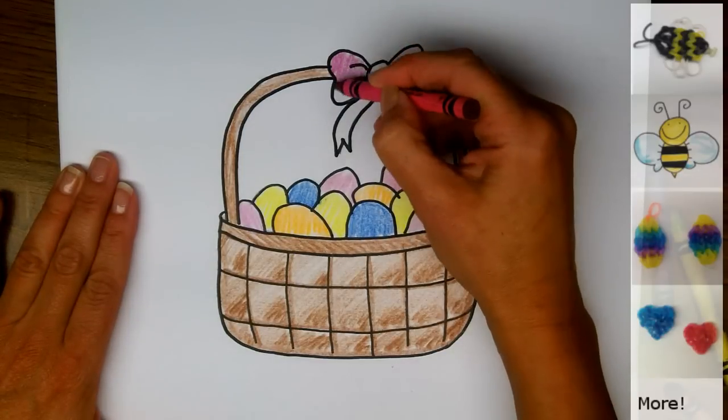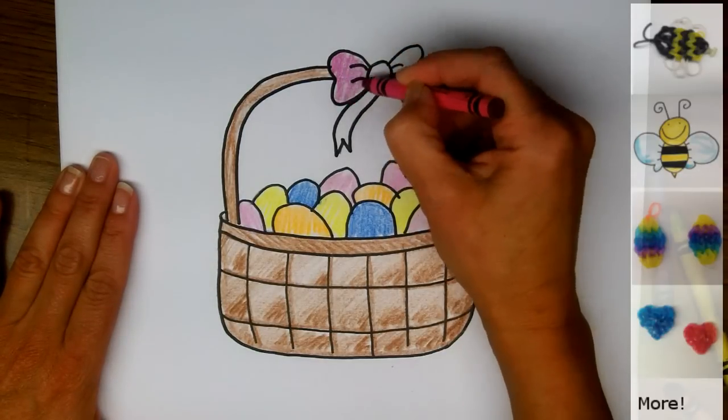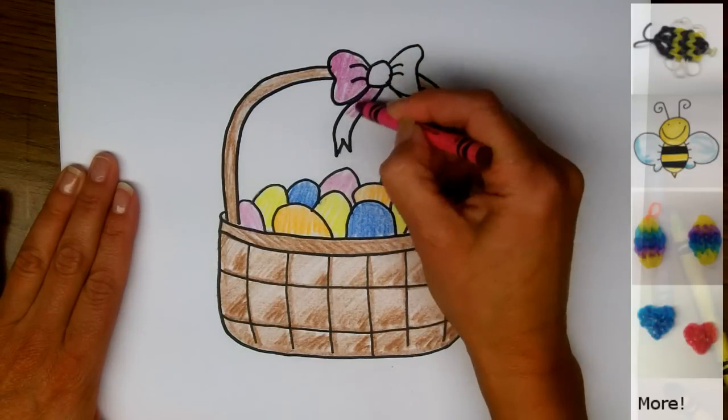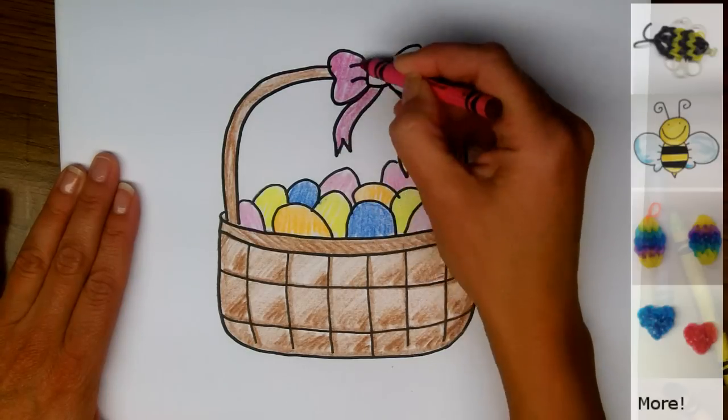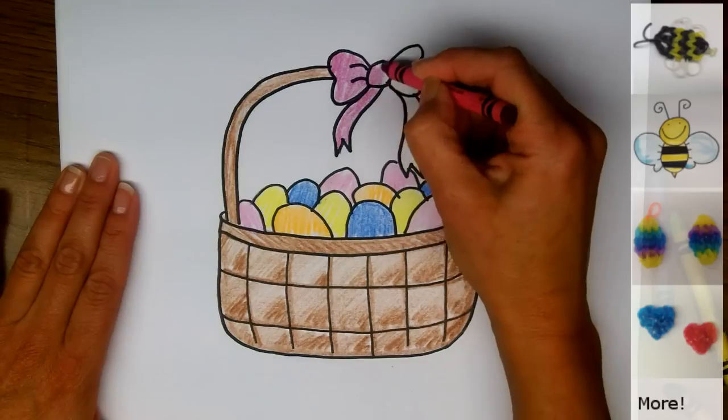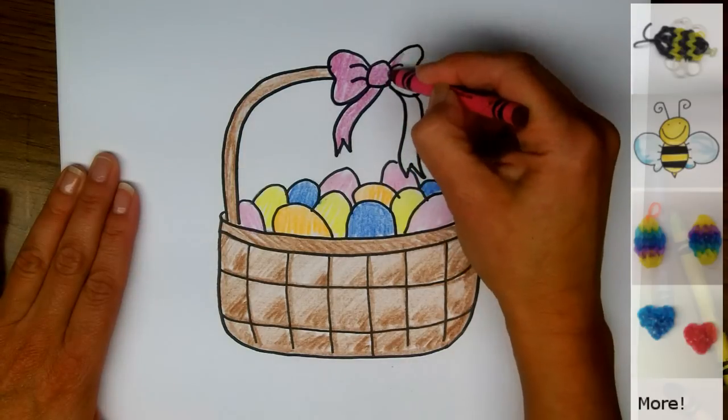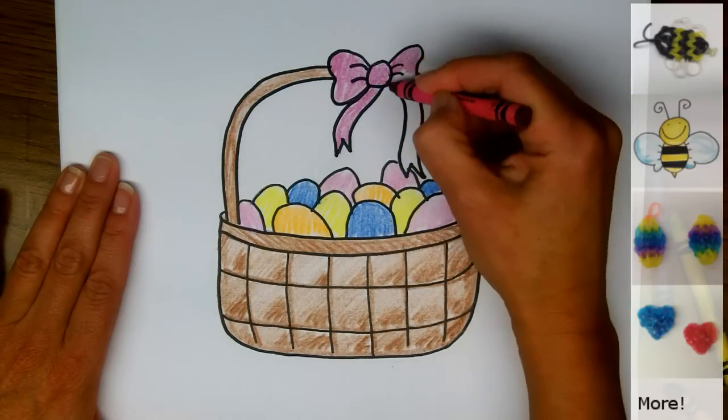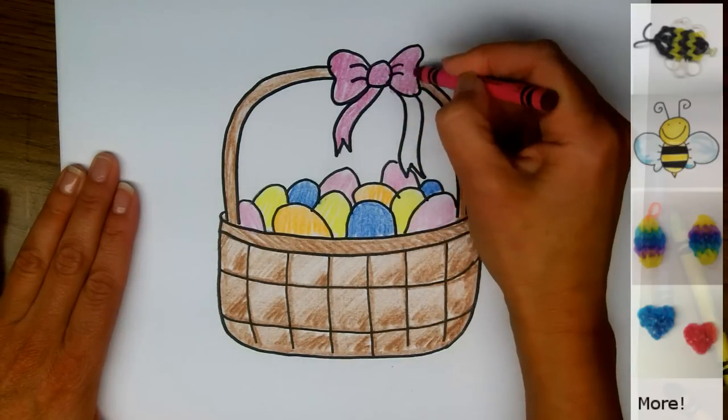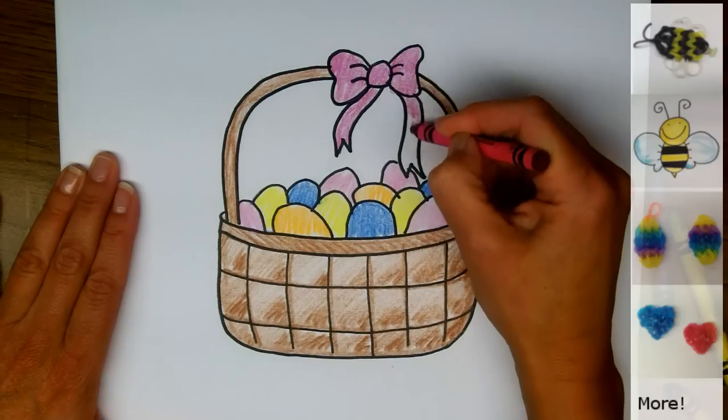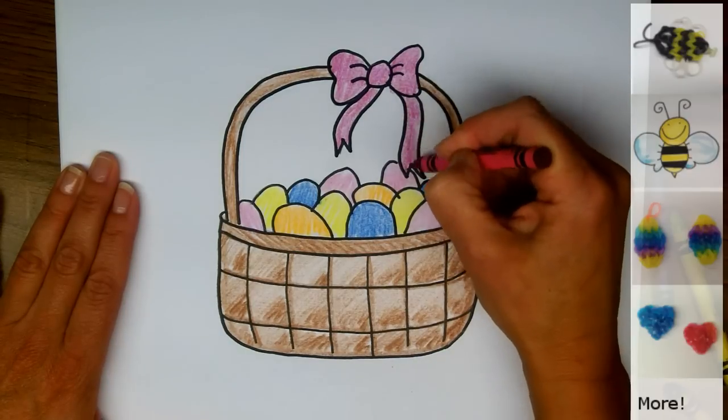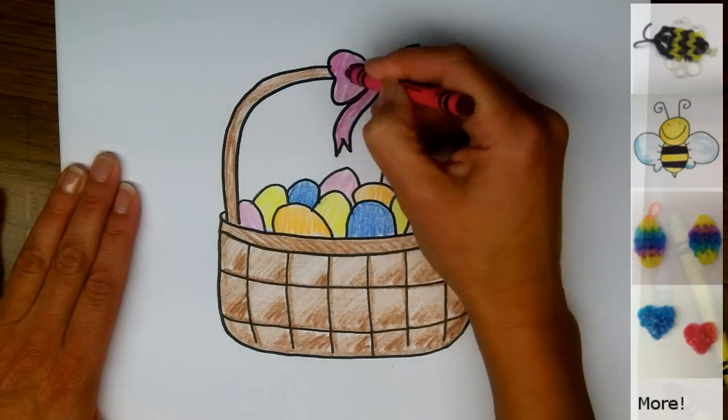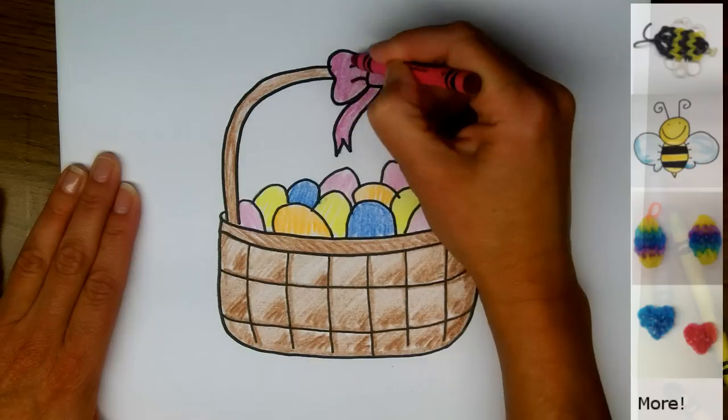And that's it. I hope you've enjoyed watching me draw this Easter basket today and I hope you drew one too. If you're on Instagram you can find me at doodledrawart, and I would love it if you would tag me in the picture of the Easter basket that you drew so that I can see it too. I love seeing my students work. You can also find me on Twitter and Facebook.